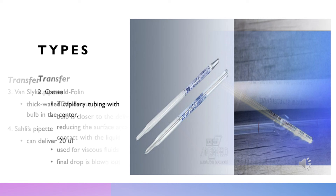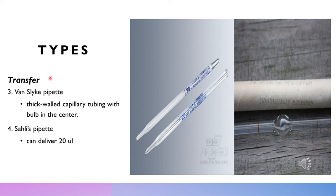Another example of a transfer or volumetric pipette is the Vans-like pipette, which has thick walls and capillary tubing with a bulb at the center. The Sally pipette can deliver 20 microliters and is used in hematology for hemoglobin measurements and determination.